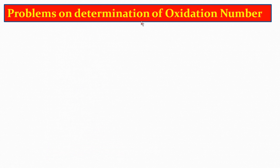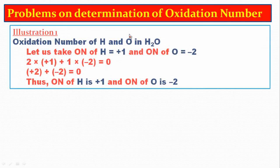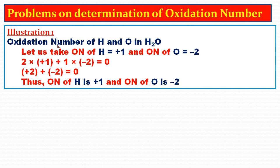Problems on determination of oxidation number. Illustration 1: Find the oxidation number of H and O in H₂O. There are two hydrogen atoms and one oxygen atom. Let the oxidation number of H equal +1 and O equal −2. So: 2 × (+1) + 1 × (−2) = 0. Thus, the oxidation number of H is +1 and the oxidation number of O is −2.